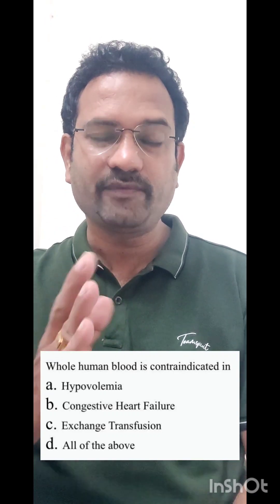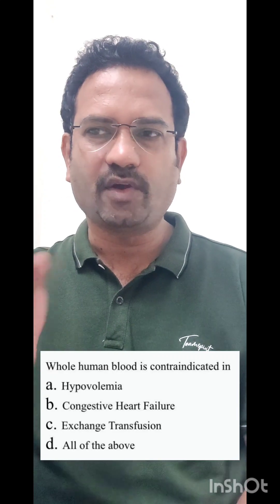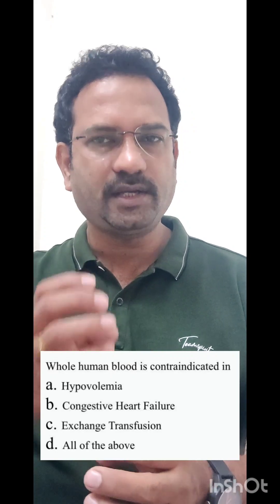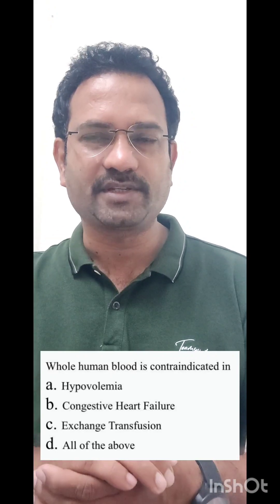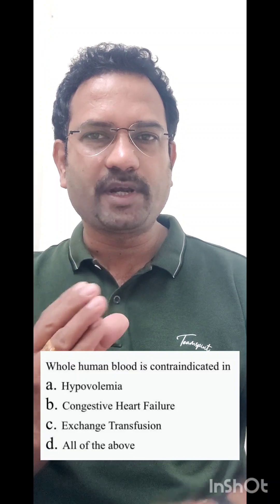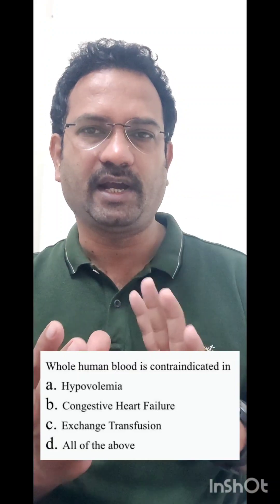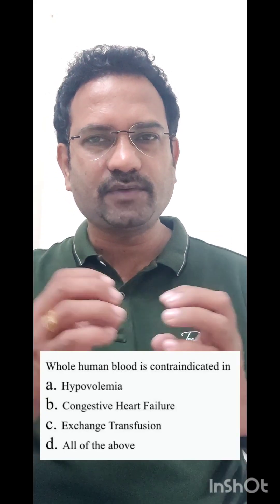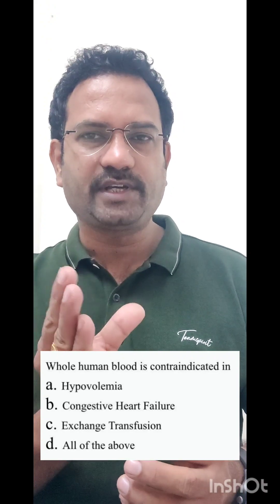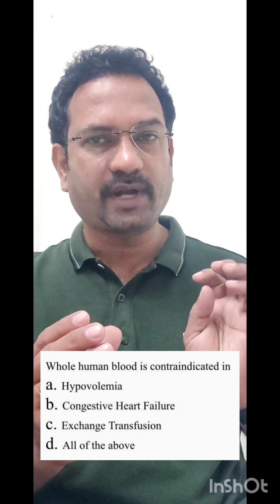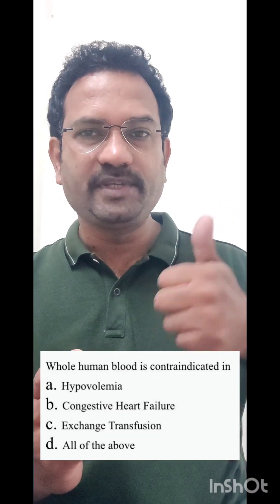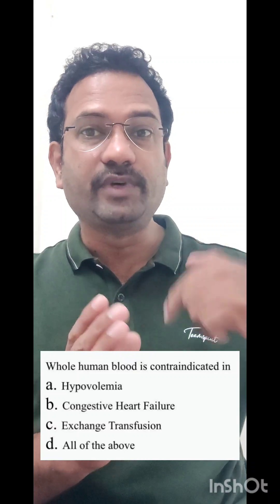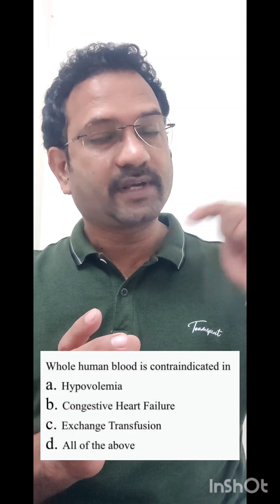So it is not contraindicated — in fact it is an indication — so option A is not correct. Option B is congestive heart failure, a condition in which the heart fails to contract properly. Because it is not contracting properly, blood gets accumulated or pooled inside the heart — that is called congestion. The cardiac output is reduced. In such a situation, if you transfuse whole blood, the volume is increased, blood cannot be pumped, and it worsens the condition.